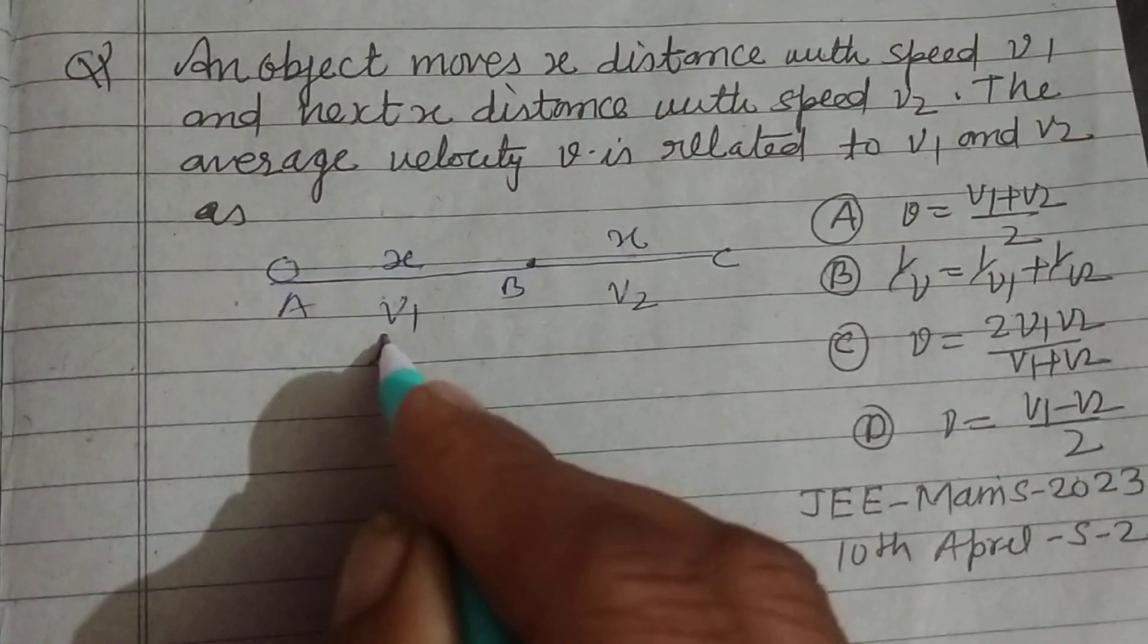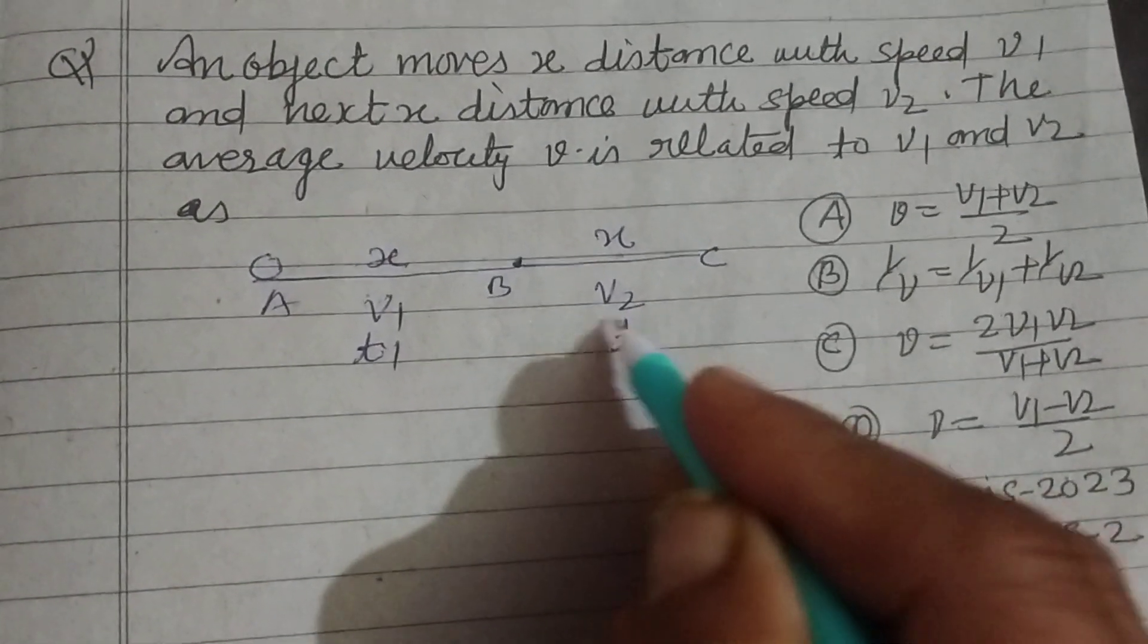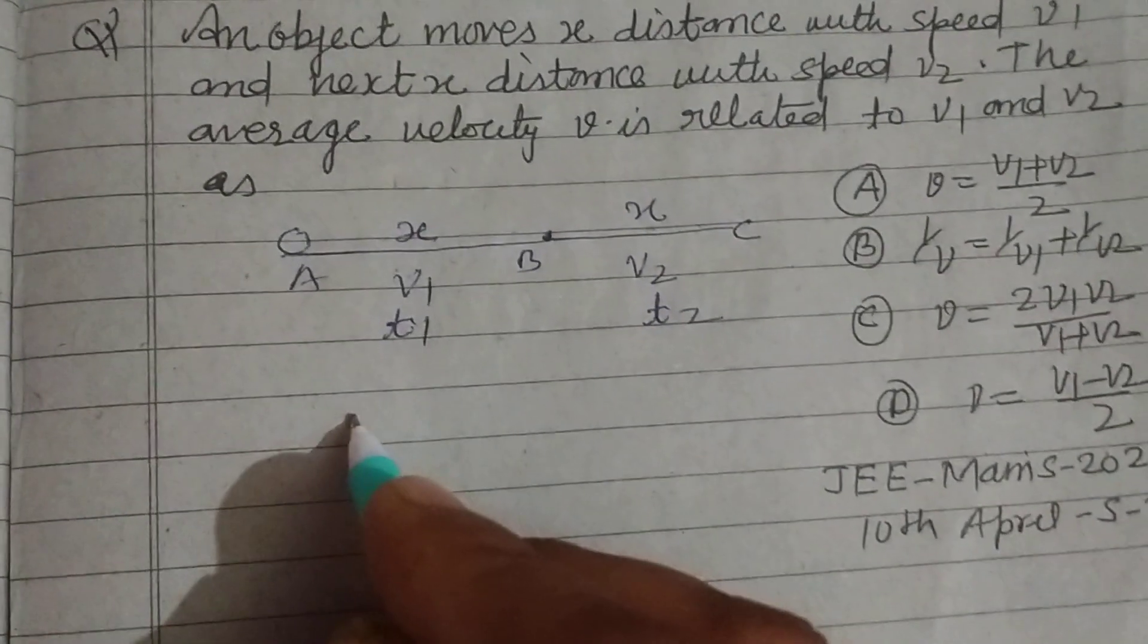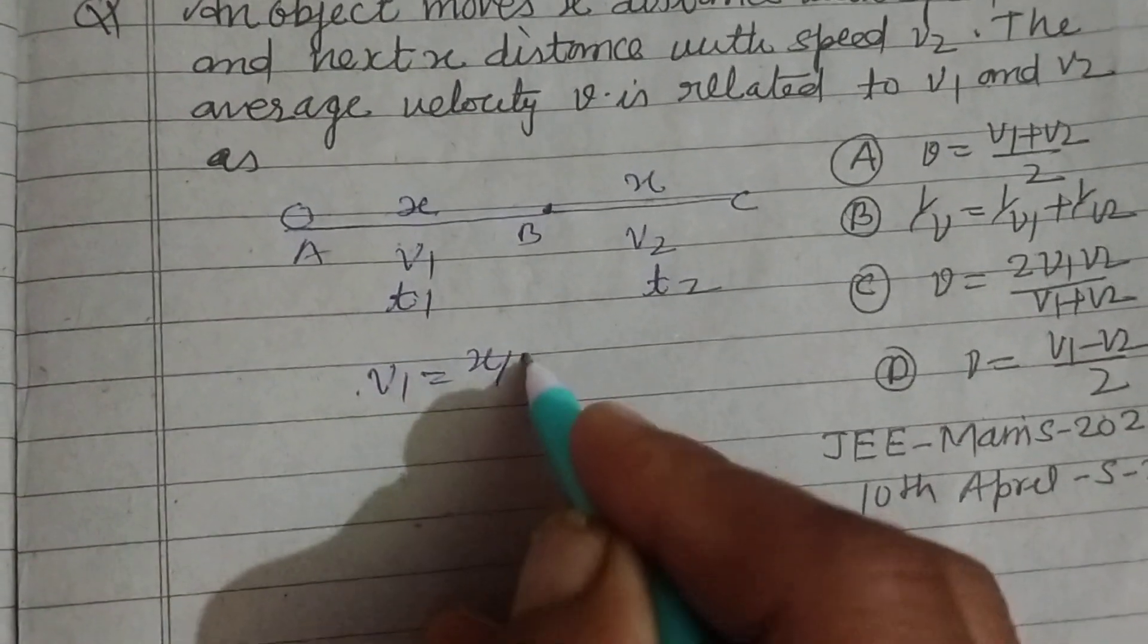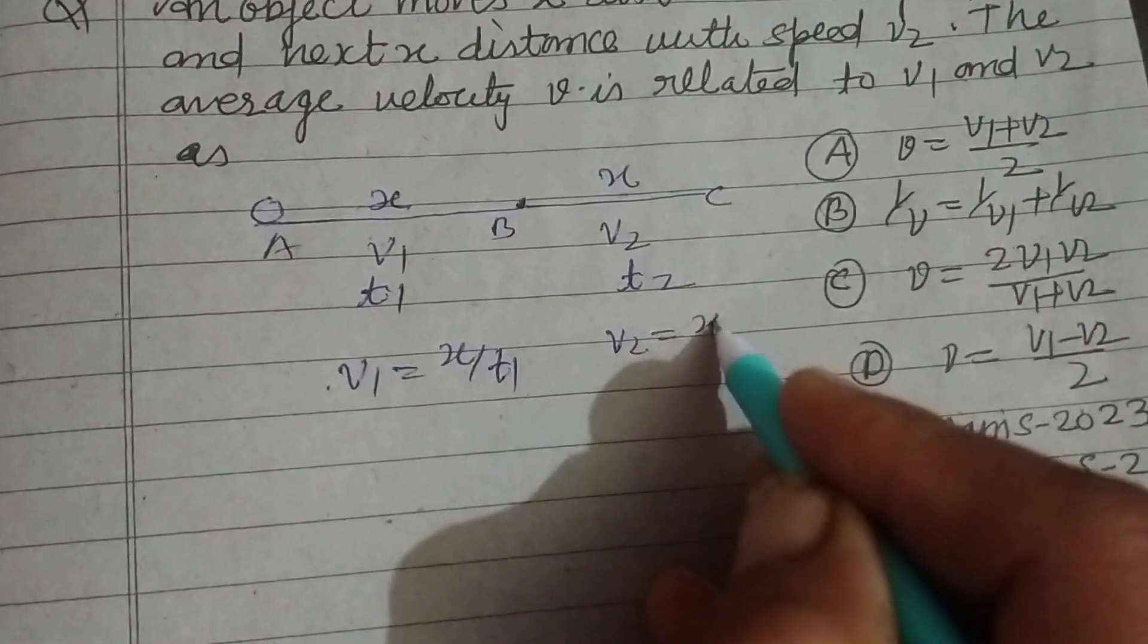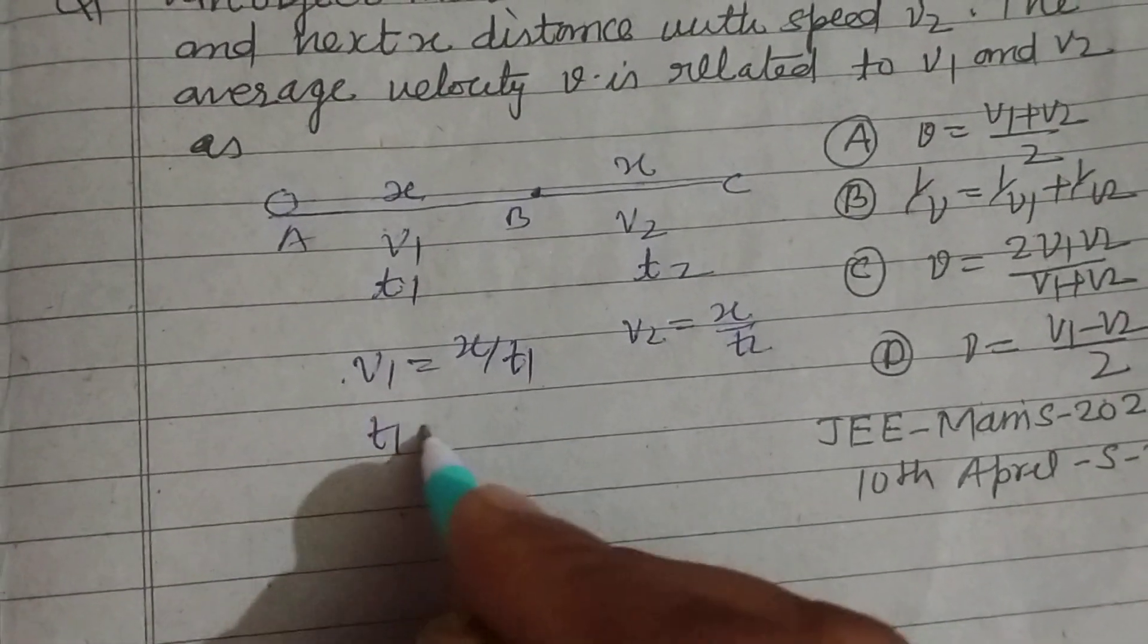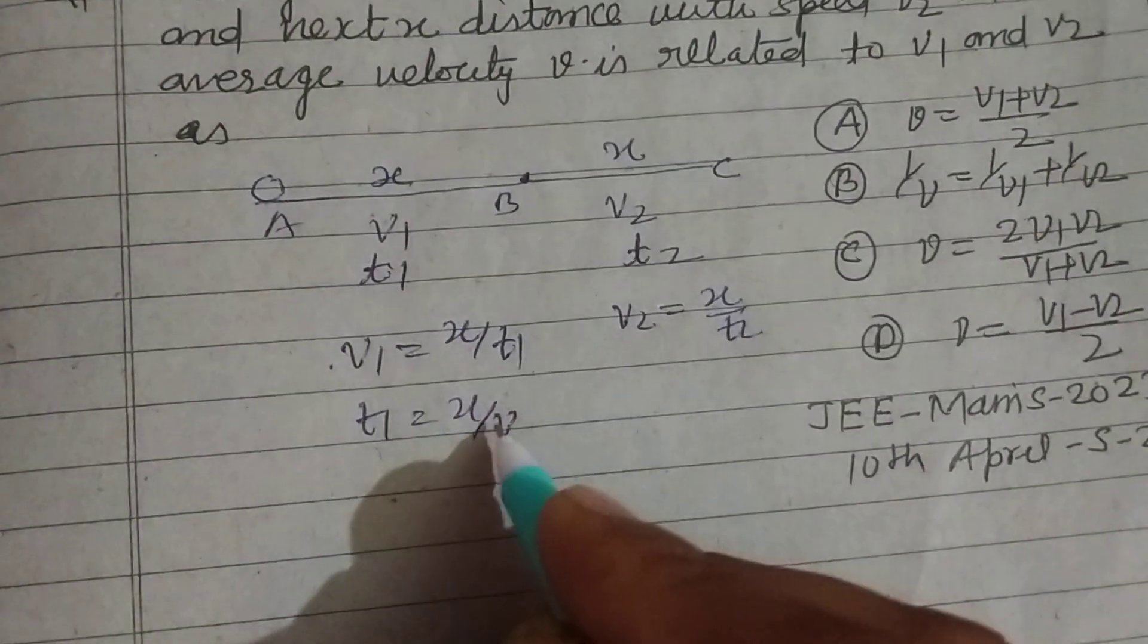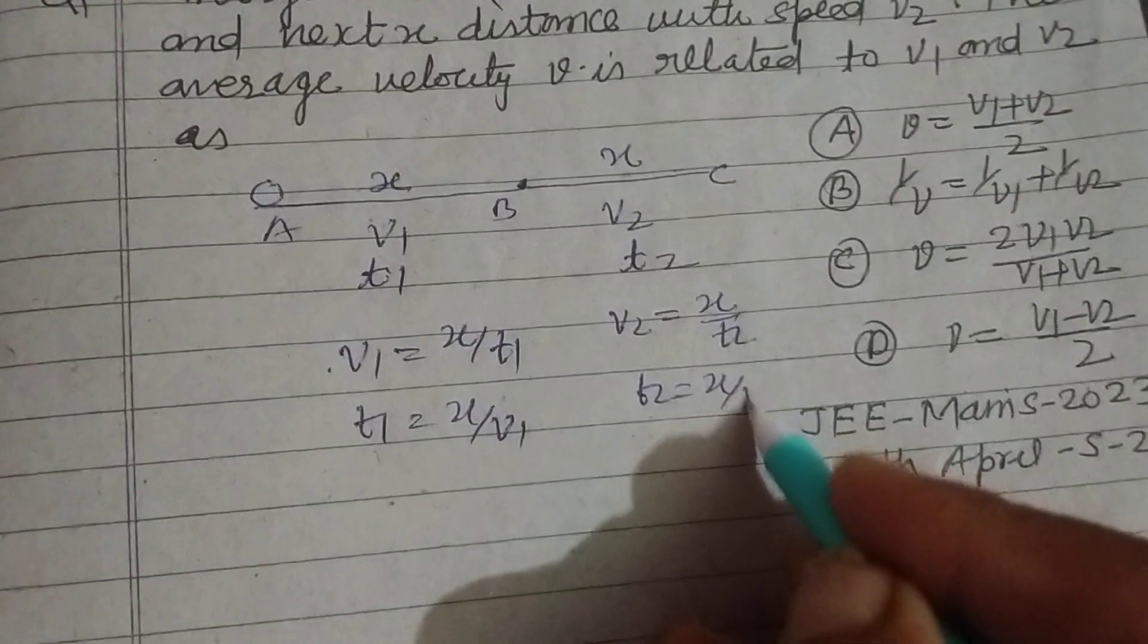So time taken from A to B is t1 and from B to C is t2. Speed equals distance upon time, so t1 equals x upon v1 and t2 equals x upon v2.